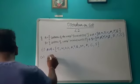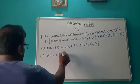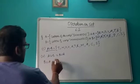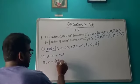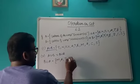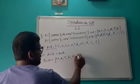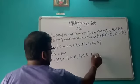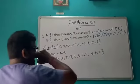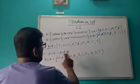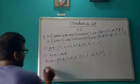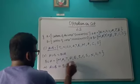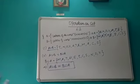Now we calculate B union A to verify A union B = B union A. Write all elements of B first, then add elements of A not present in B. You can see that both A union B and B union A contain the same elements, so we can write A union B = B union A. Hence proved.